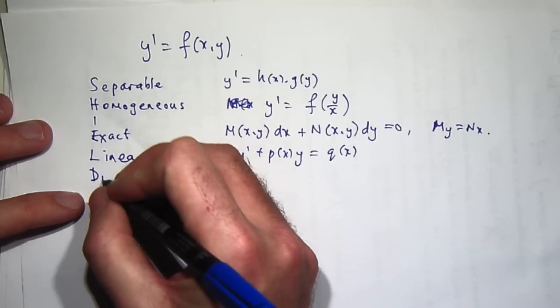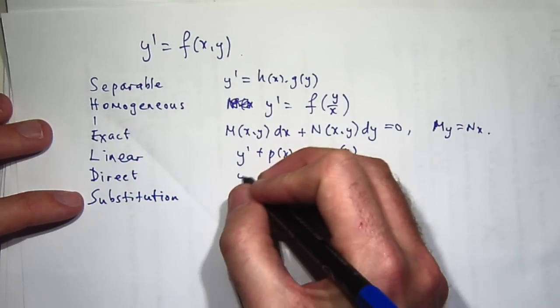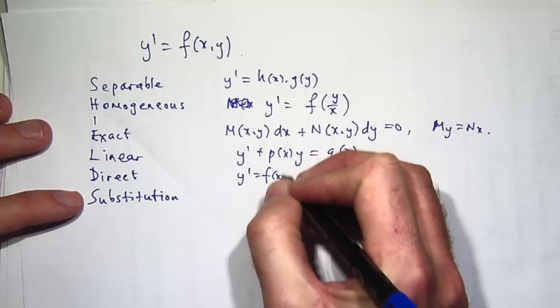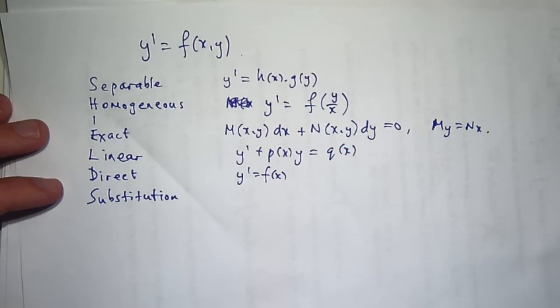Now, by the D here, I mean you can solve the differential equation directly, in other words, just by direct integration. So Y prime equals f of X, well, you just integrate both sides.